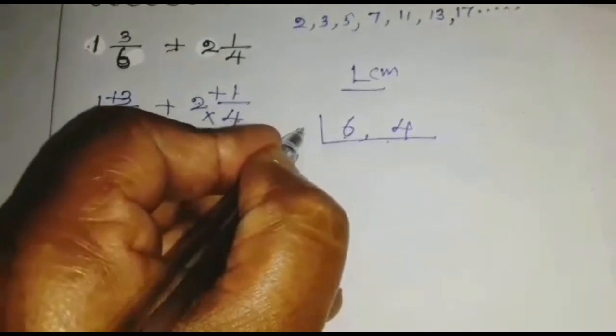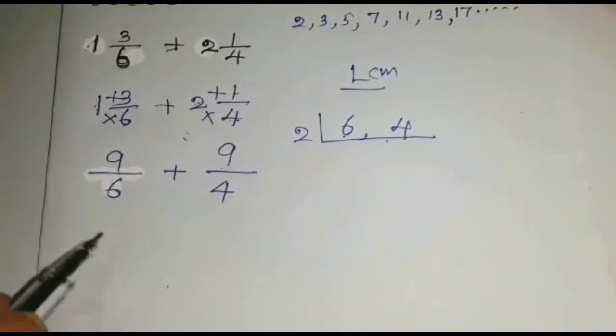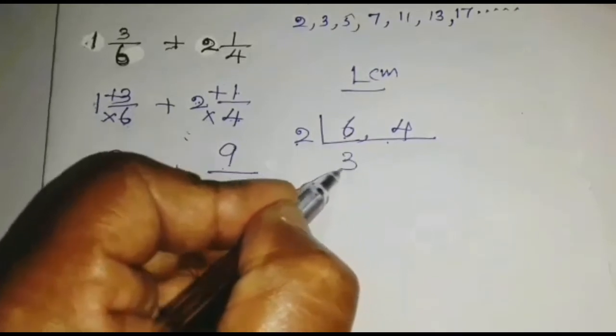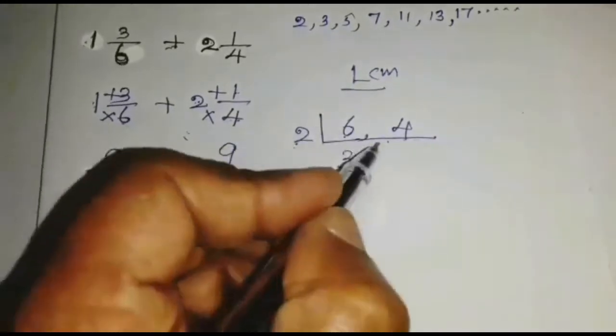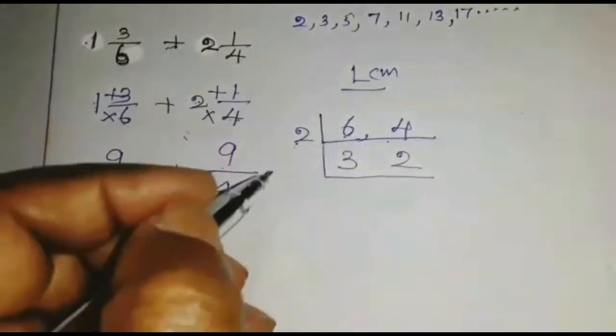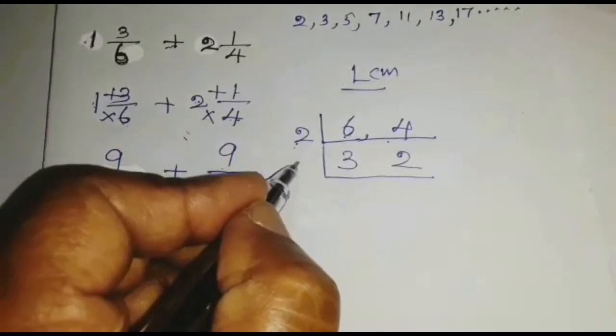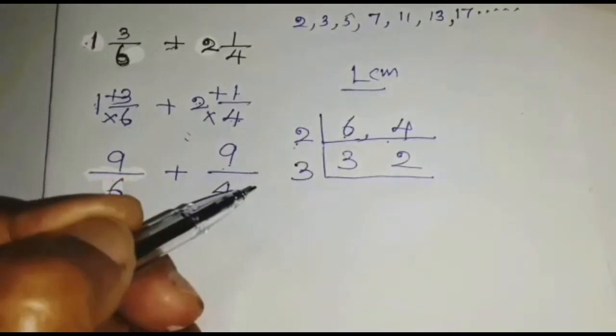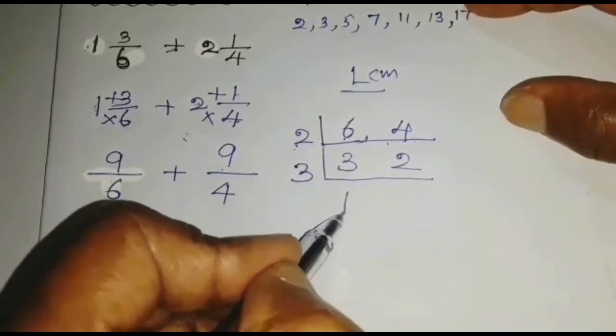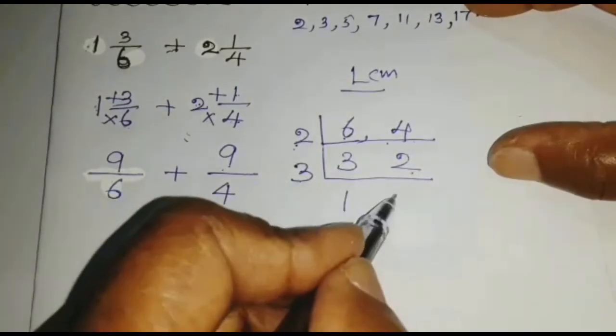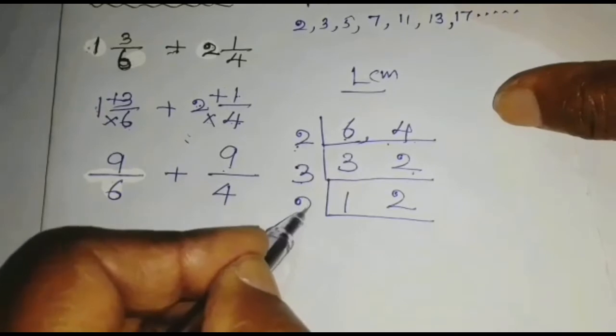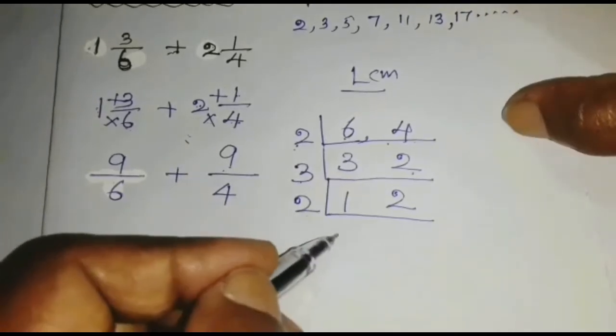6 and 4, we can divide by 2 because 2 is a prime number. 6 divided by 2 is 3. 4 divided by 2 is 2. Again, we can divide by 3 because 3 is a prime number. 1. 2 divided by 2 is 1. 2 divided by 3, that is not divisible. We can write 2 again.